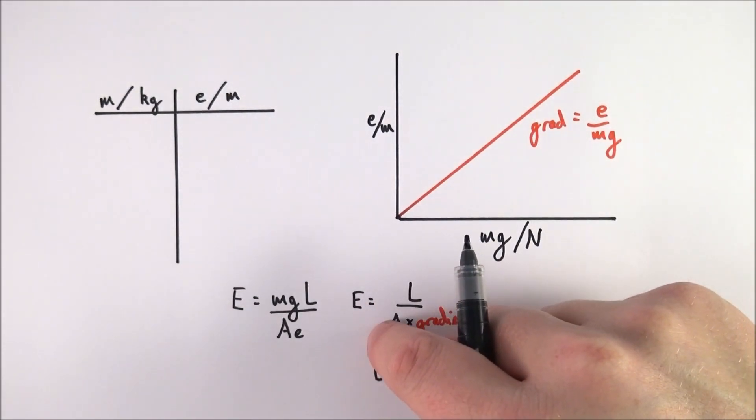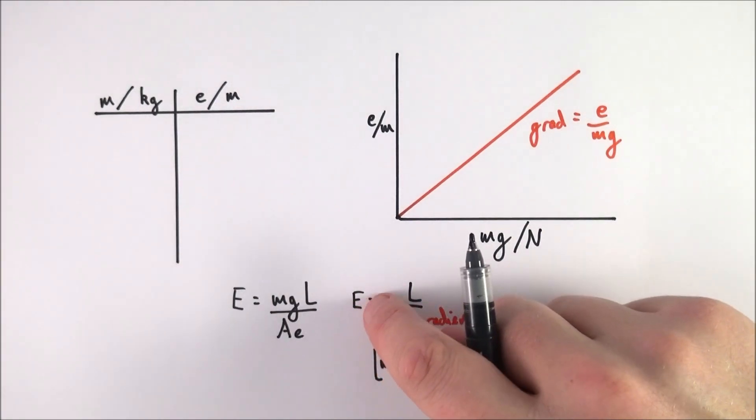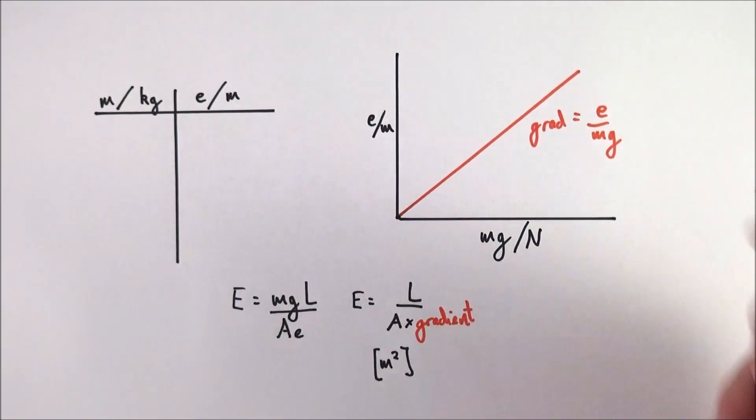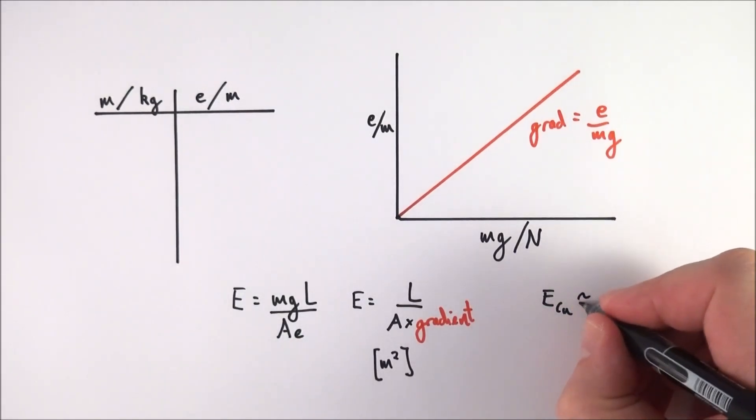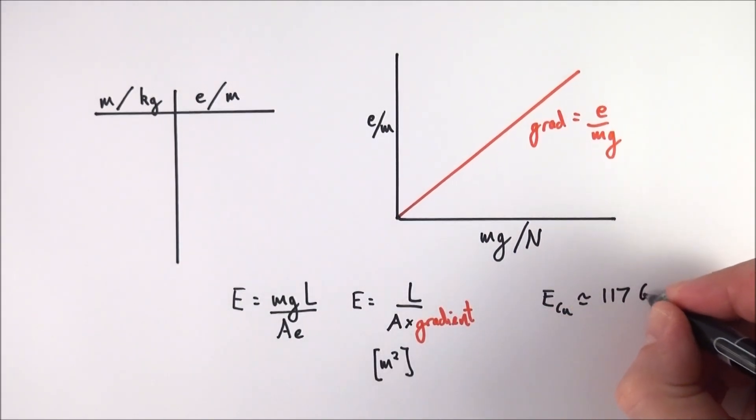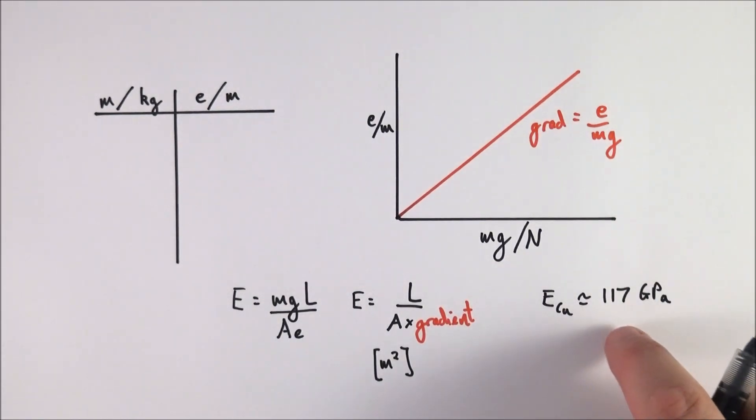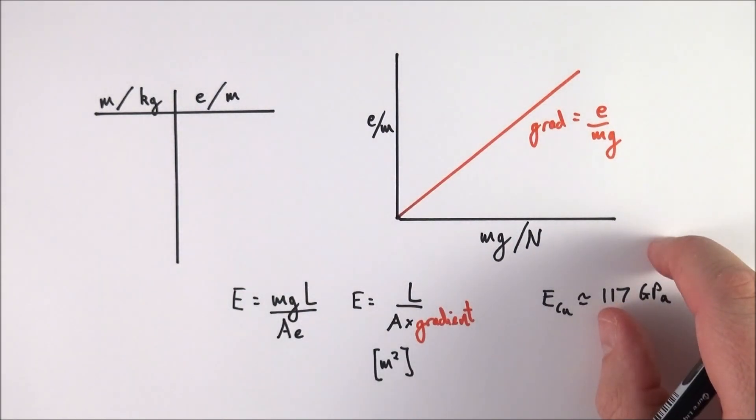Again this has to be in square meters so convert any distances or diameters from millimeters to meters. You'll have a very very small area and when you do that you should then find that you have a very large value for the Young's modulus. And typically Young's modulus for copper is in the order of 117 gigapascals, so you should be having a number something times 10 to 11 when you actually work out the Young's modulus for this material.